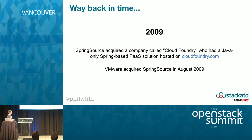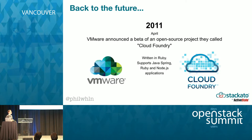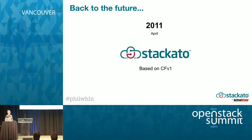Cloud Foundry — some people think it started back in 2009. The Cloud Foundry we know now kind of started in 2011 when VMware announced the open source project. ActiveState was already working on our own platform-as-a-service at the time, so we jumped straight onto Cloud Foundry on day one. Then in February of the next year, we released the first commercial version of Staccato, which was the first commercial release of Cloud Foundry — that was version 1.0 of Staccato.